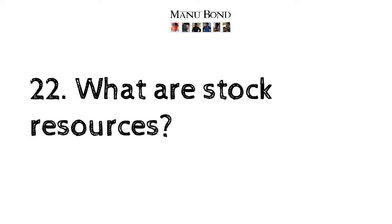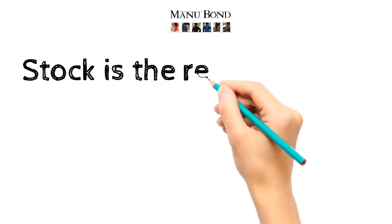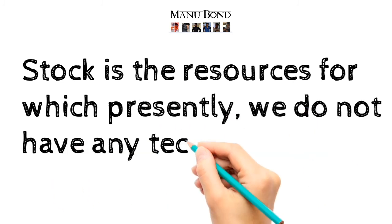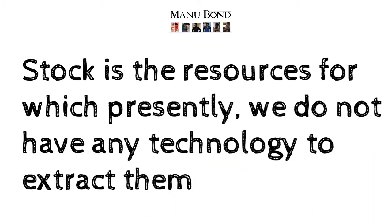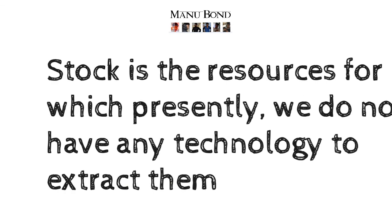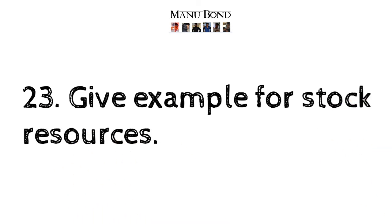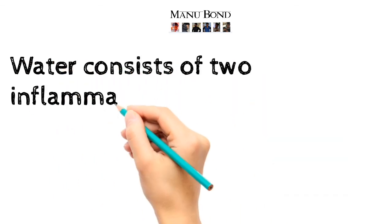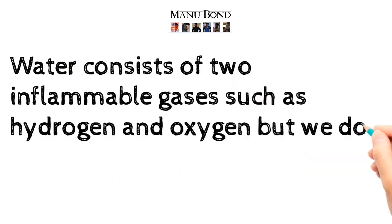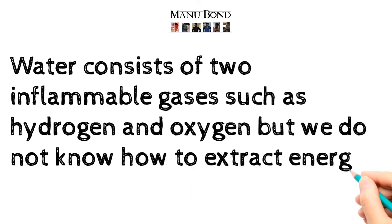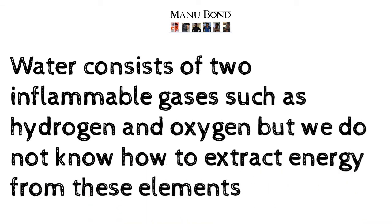Question number 22: What are stock resources? Answer: Stock refers to resources for which we presently do not have any technology to extract them. Question number 23: Give an example of stock resources. Answer: Water consists of two inflammable gases — hydrogen and oxygen — but we do not know how to extract energy from these elements.